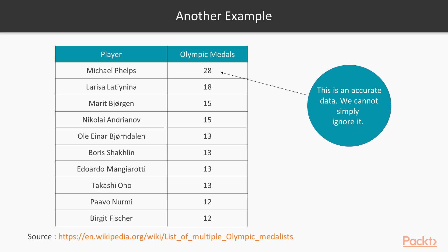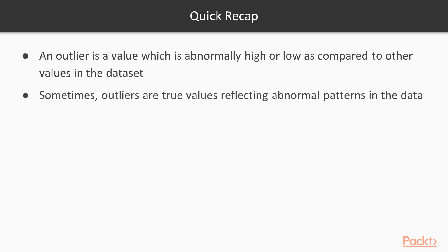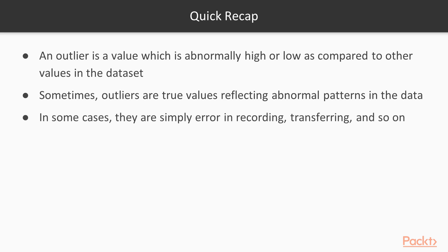You can say that this is a true outlier — not due to any error in recording, since Michael Phelps actually has 28 Olympic medals to his name. Quick recap: an outlier is a value which is abnormally high or low as compared to other values in the data set. Sometimes outliers are true values reflecting abnormal patterns in the data, and in some cases they are simply errors in recording or transferring data.